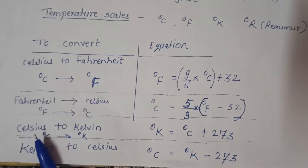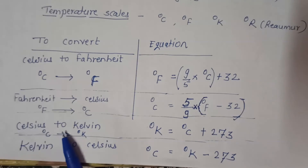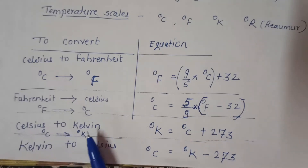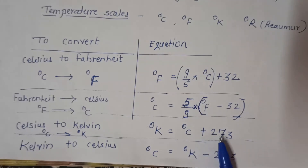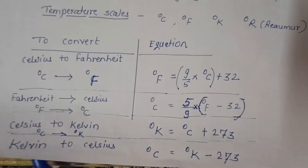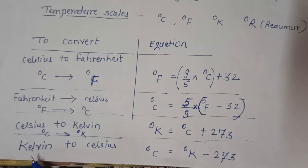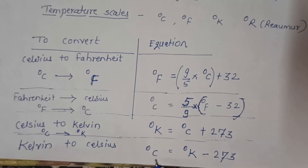Third conversion: temperature in degree Celsius converted into degree Kelvin — degree Kelvin is equal to degree Celsius plus 273. One more conversion: degree Kelvin converted into degree Celsius — degree Celsius is equal to degree Kelvin minus 273.